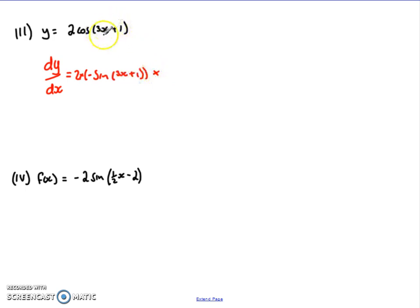We then multiply it by the derivative of this part in here. Well, it's a nice simple linear function, 3x plus 1, derivative of that is just 3.